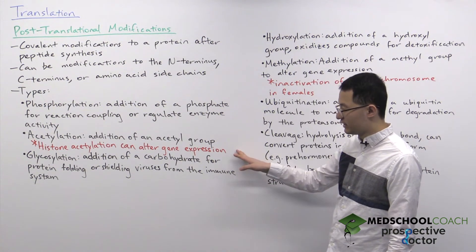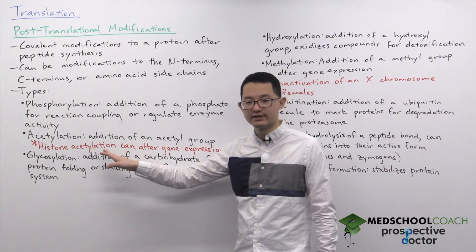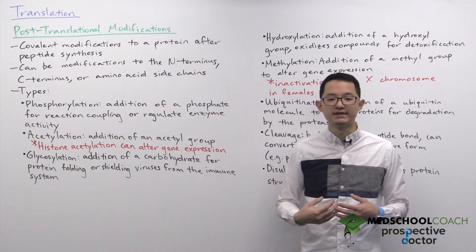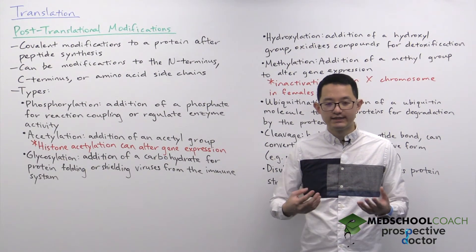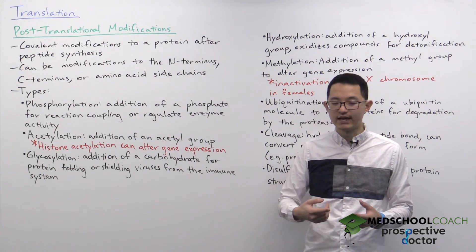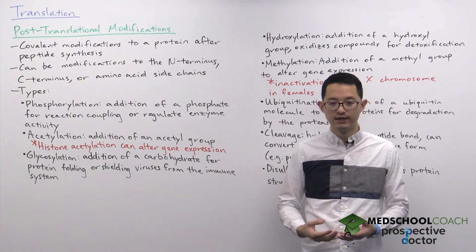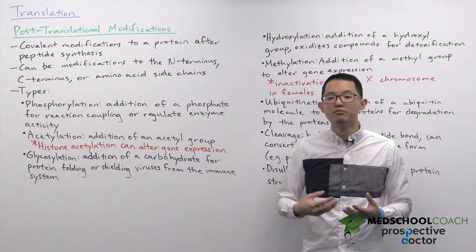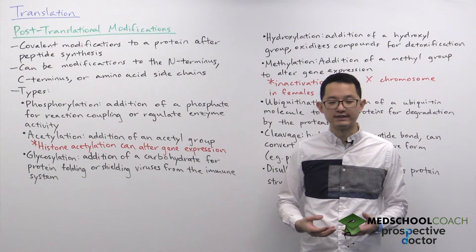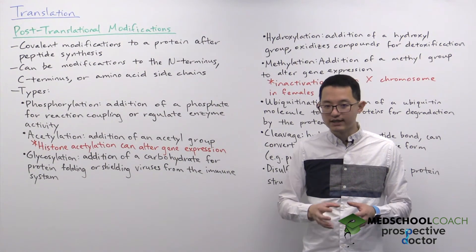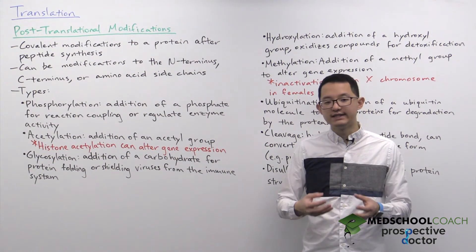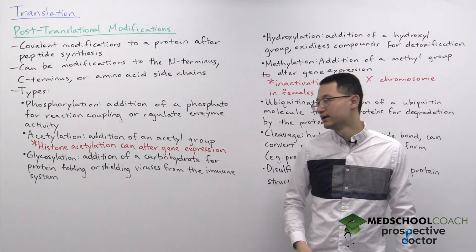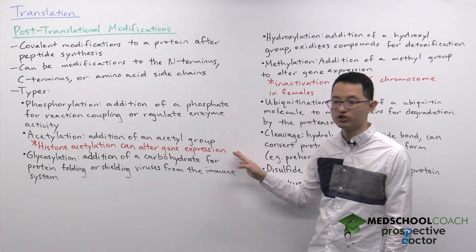A very important example of acetylation is histone acetylation. DNA has a negative charge due to its sugar-phosphate backbone, and it is wrapped around histone proteins that have many basic amino acids and are positively charged. Acetylating histones removes their positive charge, causing the negatively charged DNA to bind less tightly to the histones. This makes the DNA more available for transcription and can increase gene expression. Histone acetylation can therefore alter gene expression.